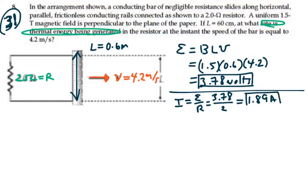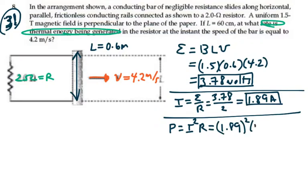So we have 1.89 amps going through the resistor and we want the rate of thermal energy being generated. That's going to be power, and for a resistance like that, that's going to be equal to I squared R. So that will be 1.89 amps squared times 2 ohms, and that is equal to